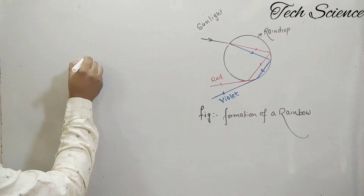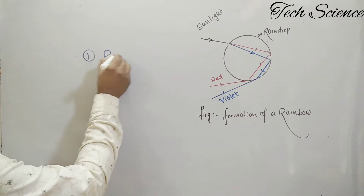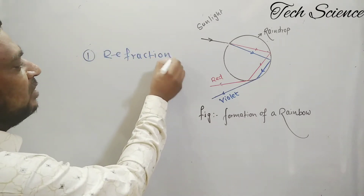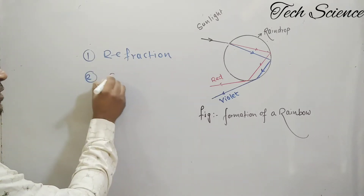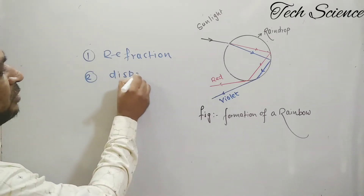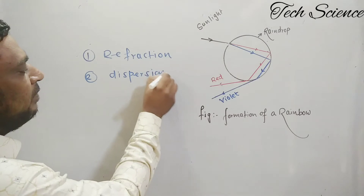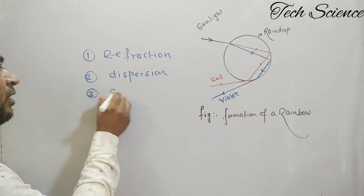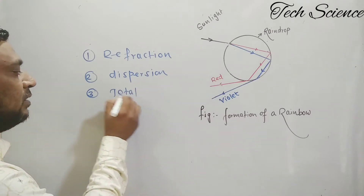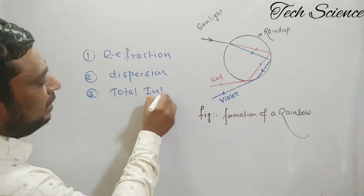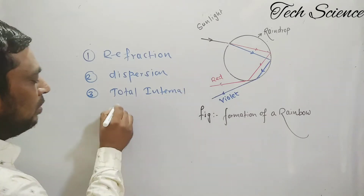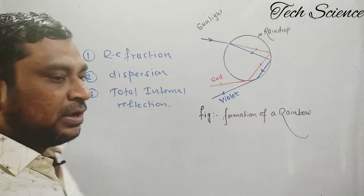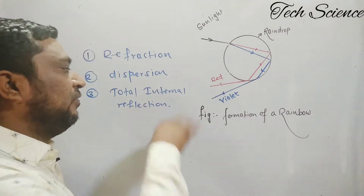The three phenomena are: first, refraction of light occurs; second, dispersion of light occurs; and third, total internal reflection occurs. The combining of these three phenomena is what we call the formation of rainbow.